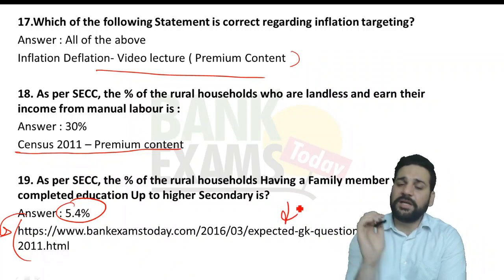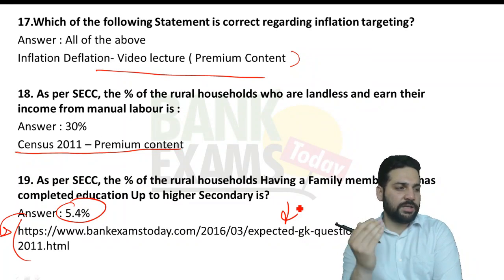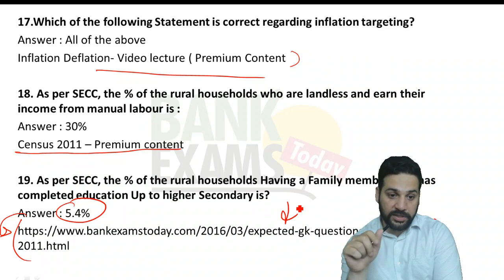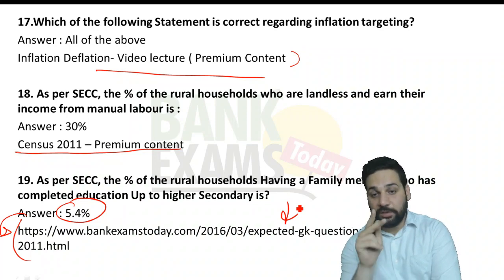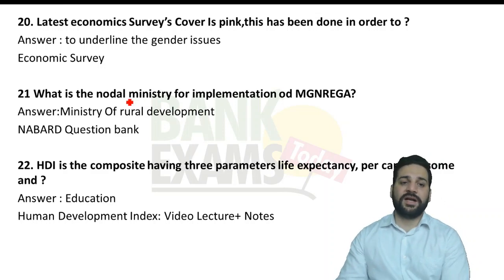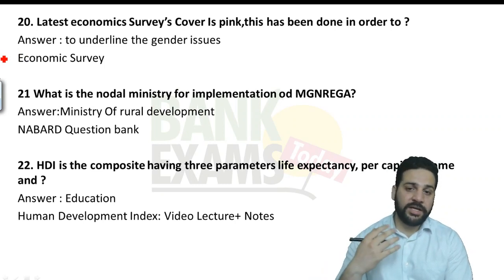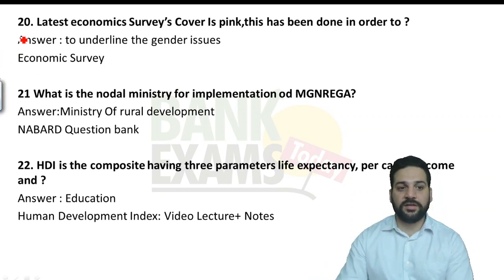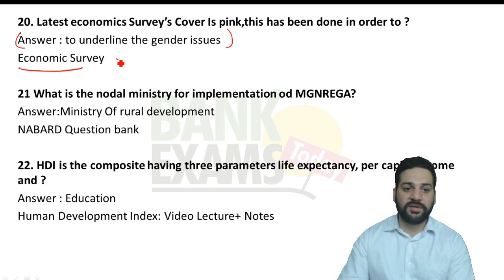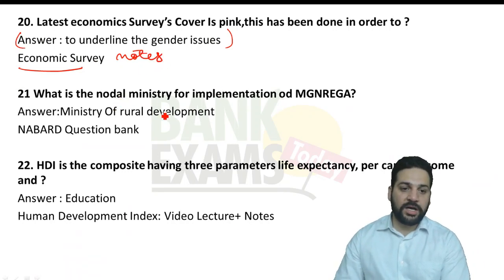That census article was part of many GK Digests — we republished it most recently in January. The latest economic survey cover being pink was a common expected question highlighting gender issues — covered in our economic survey notes. The nodal ministry for MGNREGA is the Ministry of Rural Development — from the NABARD Question Bank; there were around six questions from that question bank alone.